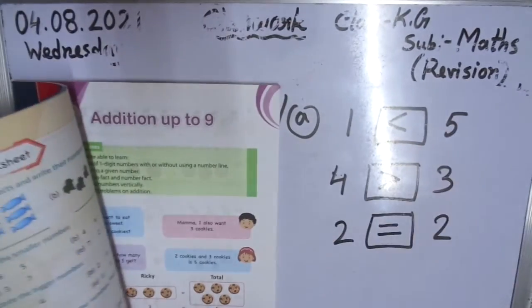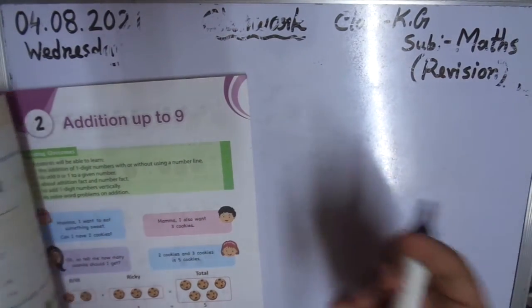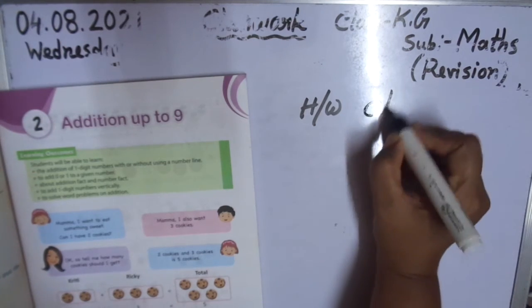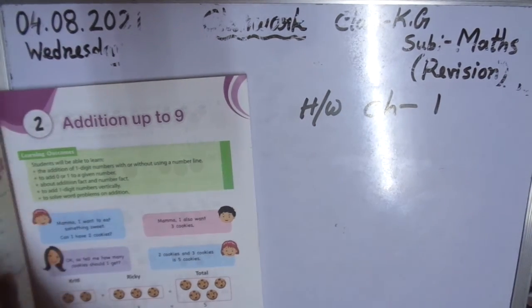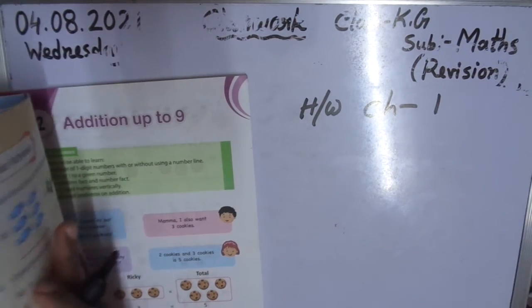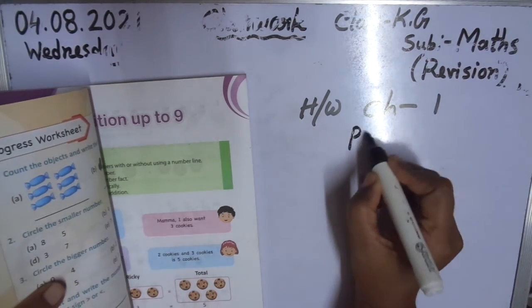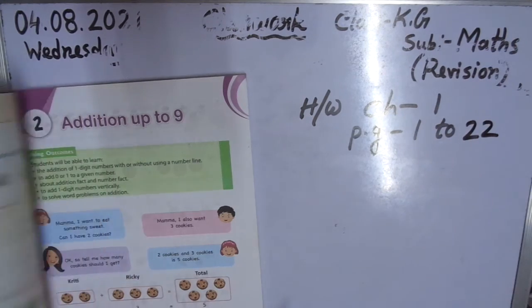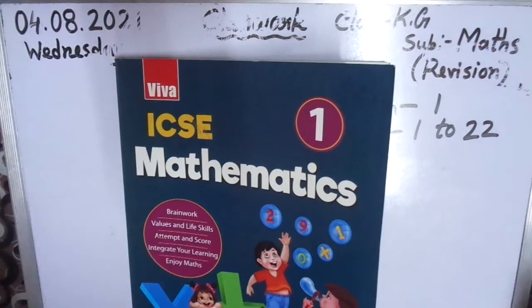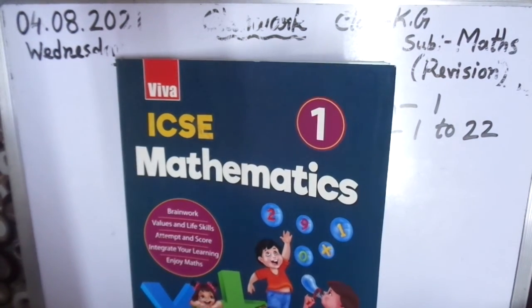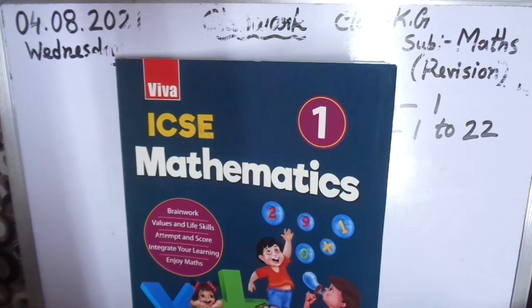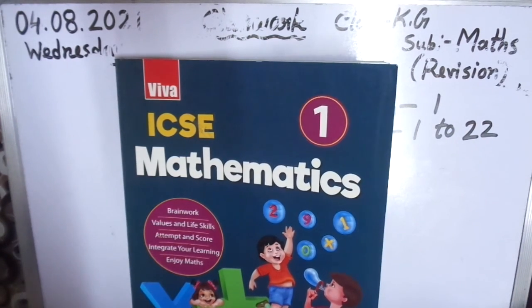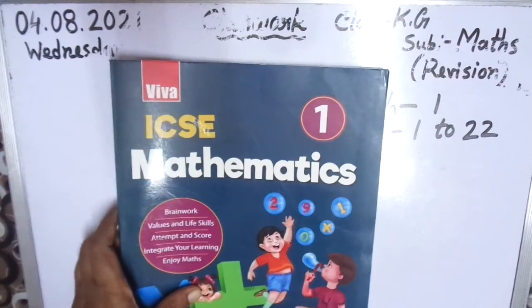I hope everyone understood. Take out your school diary — homework. Chapter 1, pages 1 up to 22. Children, if you are having any more doubts, watch the video that I have made earlier where I have explained in detail. So children, practice chapter 1.